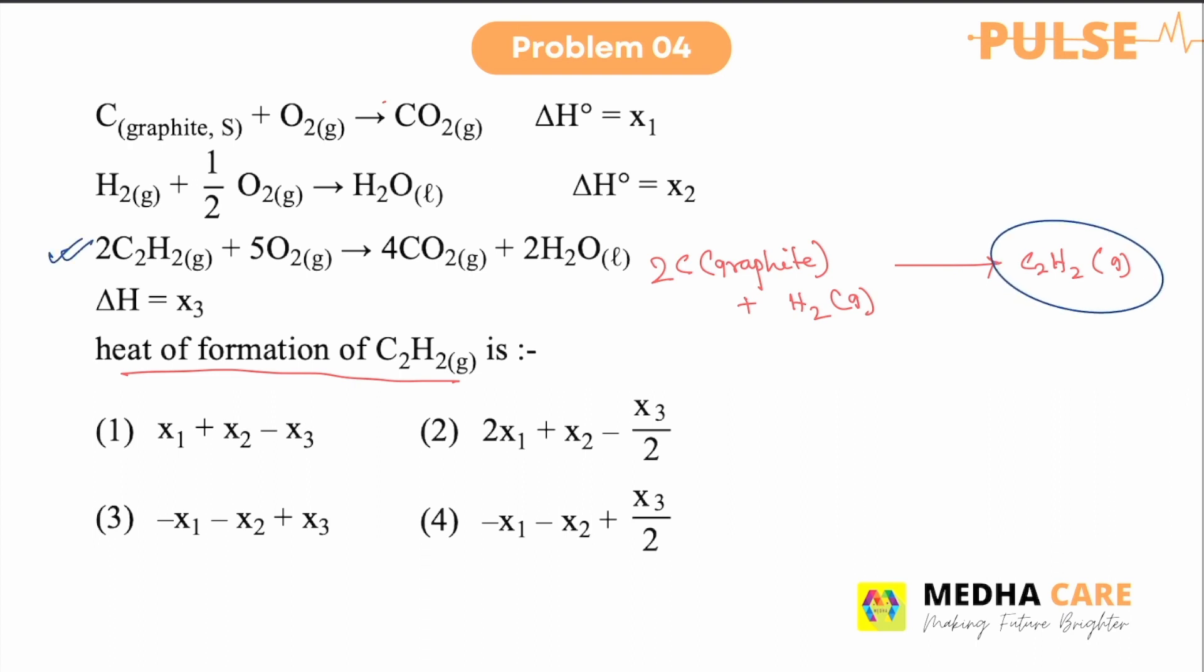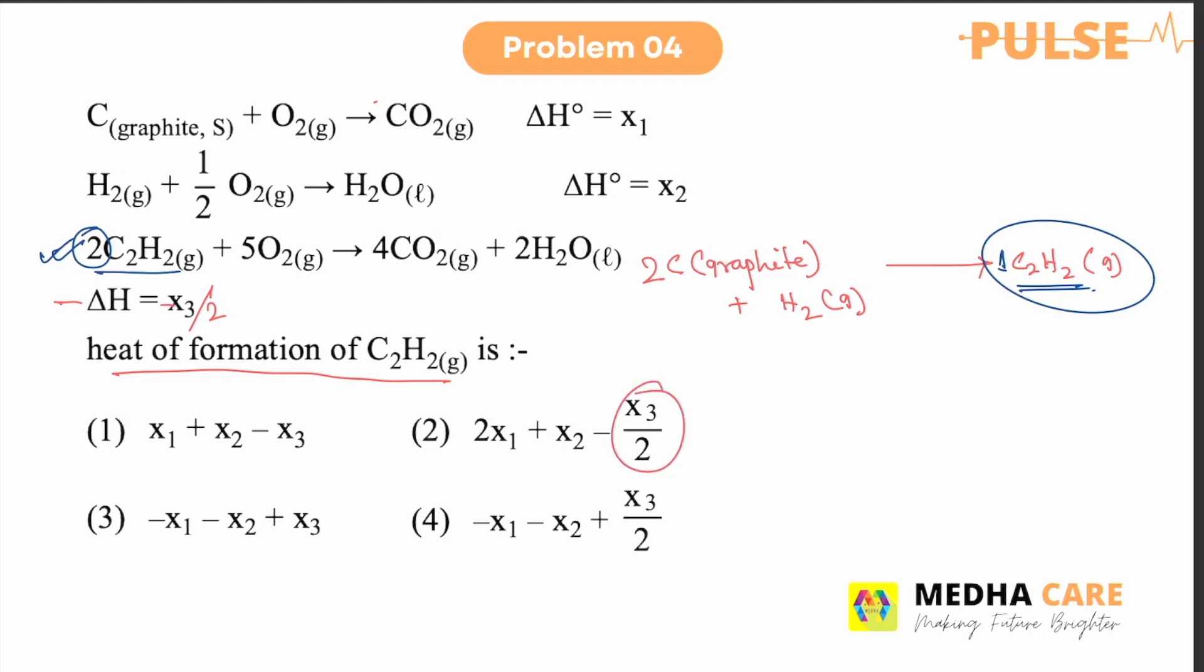So as you can see, we have to take C2H2 on the right hand side. But in this equation, you can see C2H2 on the left hand side. As you know, for calculation of heat of formation, we have to take one mole of the gas C2H2. So here you can see two moles are taken. That means you have to divide that one by two. So delta H, this delta H will be divided by two and it will be taken to the right hand side. So there will be a negative sign. So in the options, you can see only X3 by two is present here.